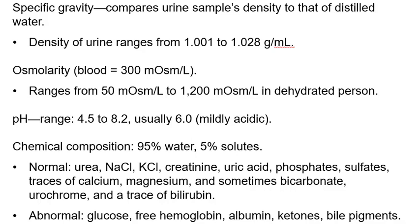Looking at urine chemically, you should not find glucose, free hemoglobin, red blood cells, white blood cells, significant albumin, ketones, or bile pigments. Ketones indicate something bad is happening — some people deliberately put their body into ketosis, the so-called ketone diet, burning fat instead of glucose.